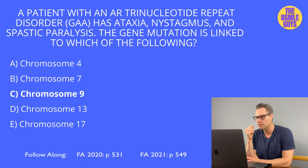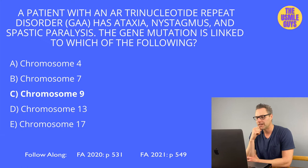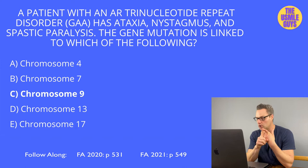Friedreich's ataxia results in a variety of findings: spastic paralysis from lateral corticospinal tract degeneration; ataxia from spinocerebellar tract degeneration; decreased vibration and proprioception from dorsal column degeneration; and loss of DTRs due to degeneration of the dorsal root ganglia.